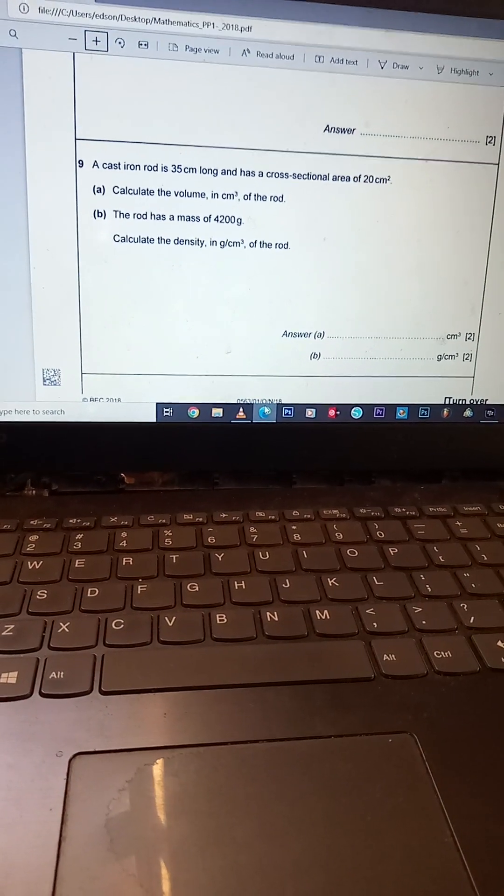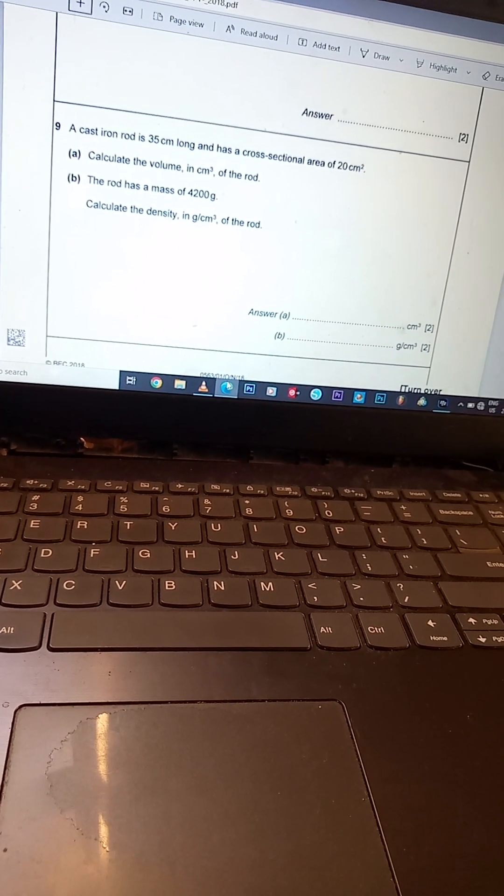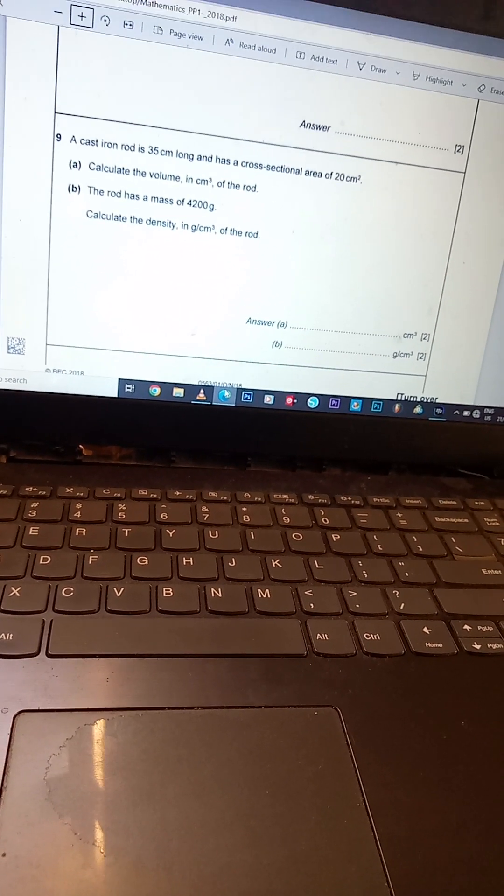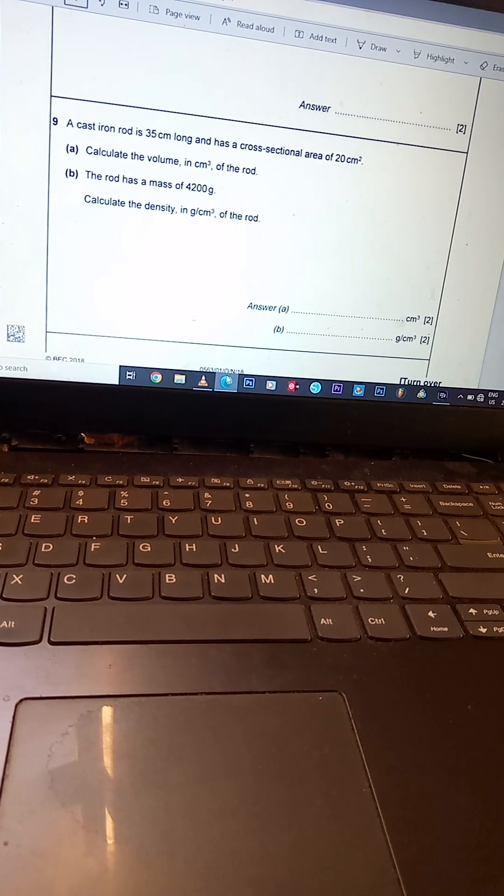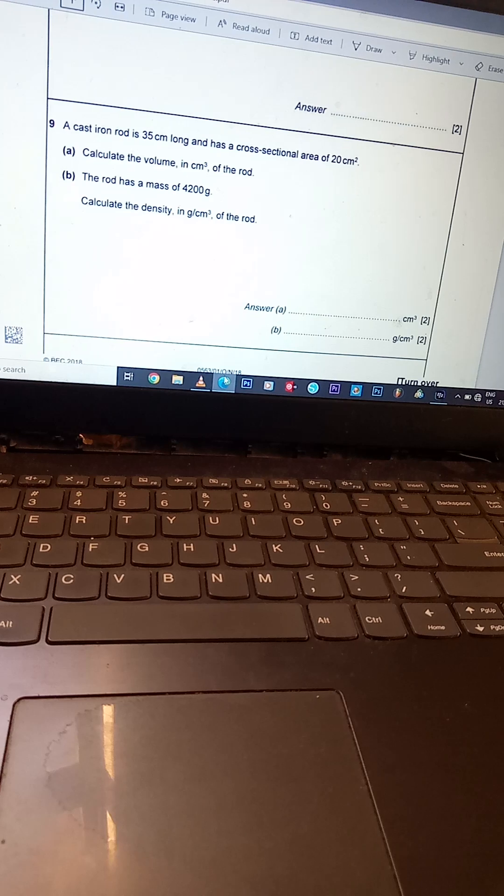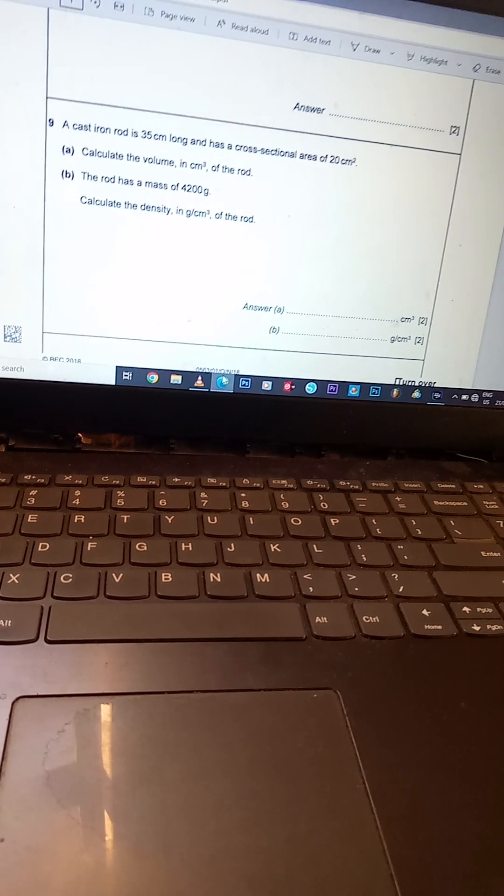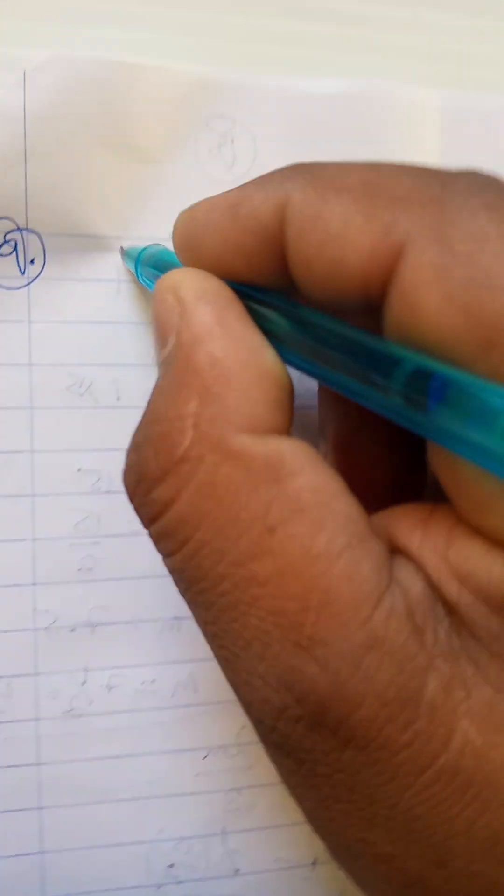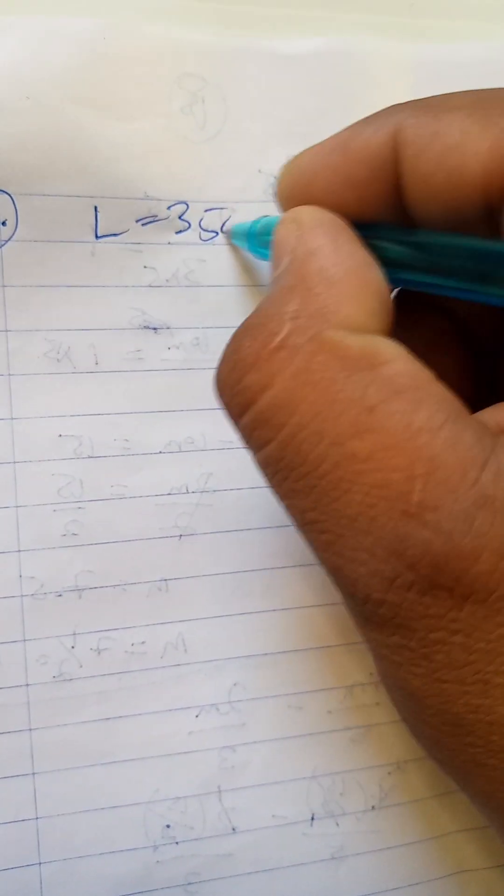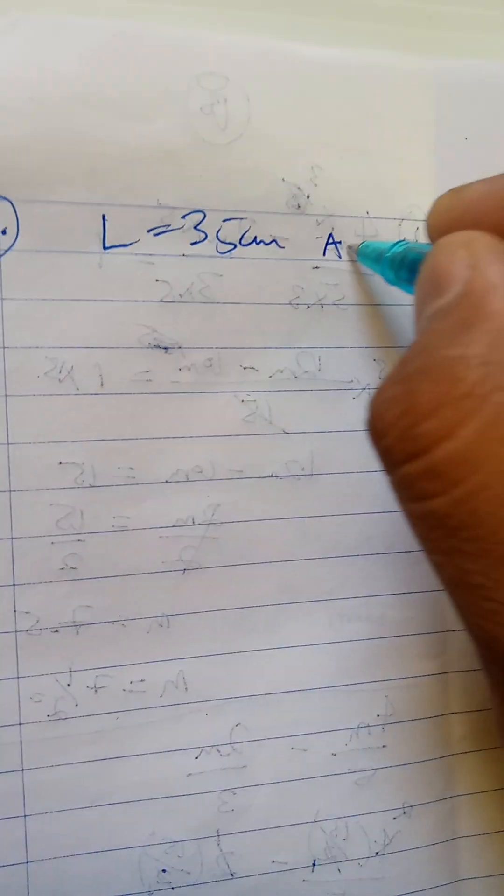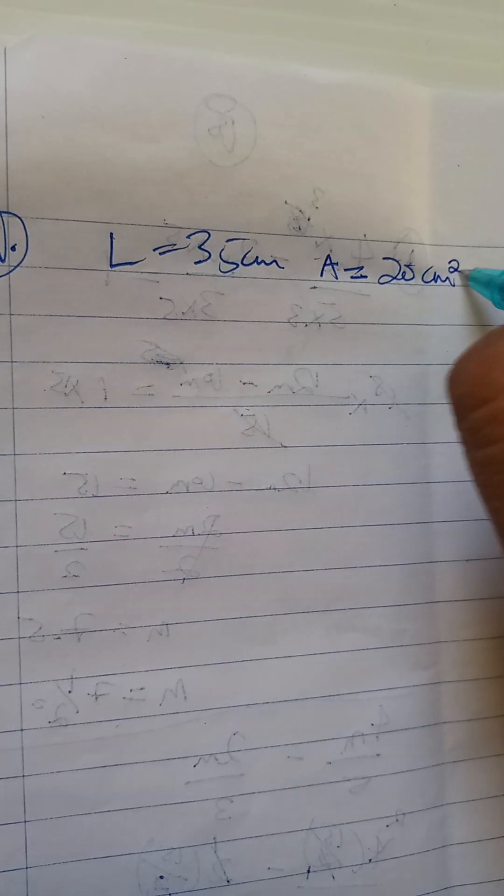So now the next question says a cast iron rod is 35 centimeters long and has a cross-sectional area of 20 centimeters squared. First part says calculate the volume in centimeter cubed of the rod. Let's do the first one first. So it says the length is 35 centimeters long and it has a cross-sectional area of 20 centimeters square, right? 20 square centimeters.